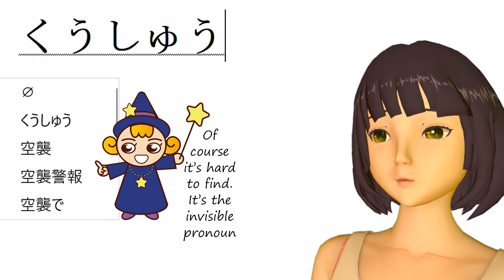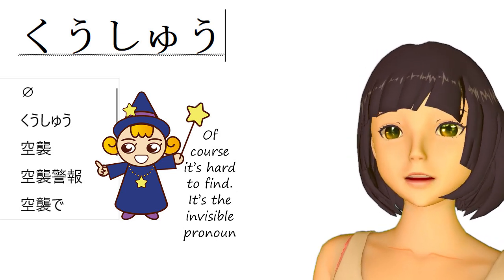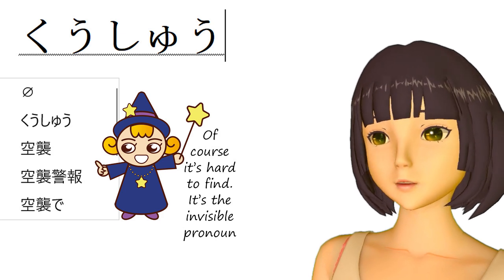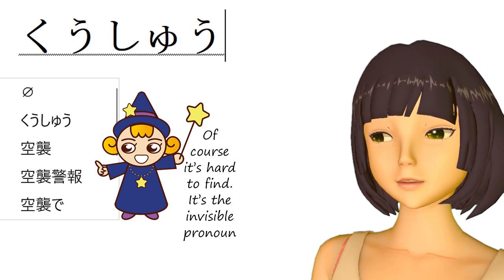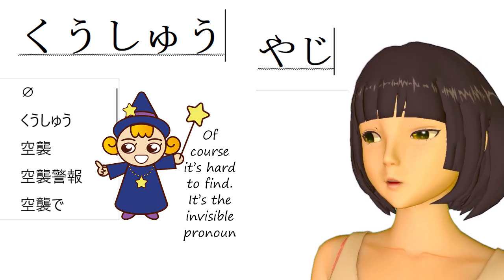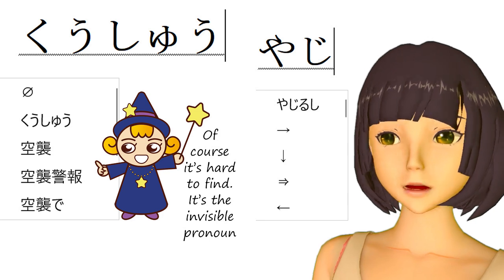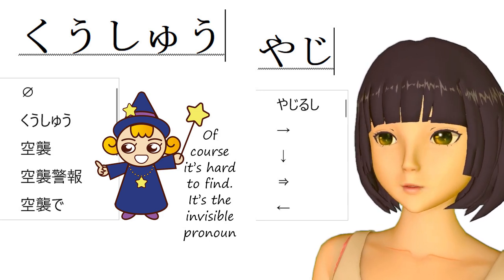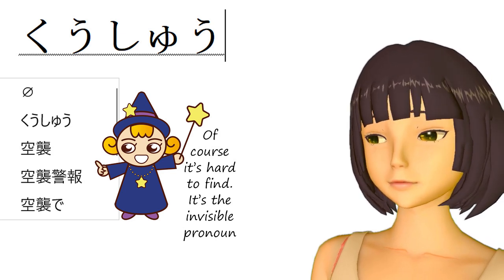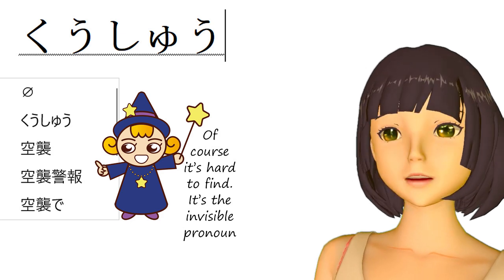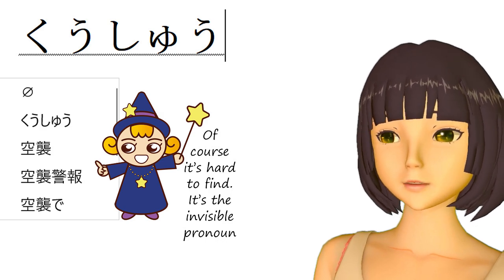There are a lot of other fun things you can do with the IME. For example, if you type hoshi you'll get various kinds of stars, including black ones, white ones, and colored ones. If you type hato you'll get various kinds of hearts. If you type yajirushi you'll get arrows of various kinds pointing in all directions. And if you type kaomoji you'll get a whole variety of Japanese kaomoji, or emoticons, which are quite fun to browse through. You can experiment yourself with other words and see what you get — lots of interesting things tucked away in that IME.